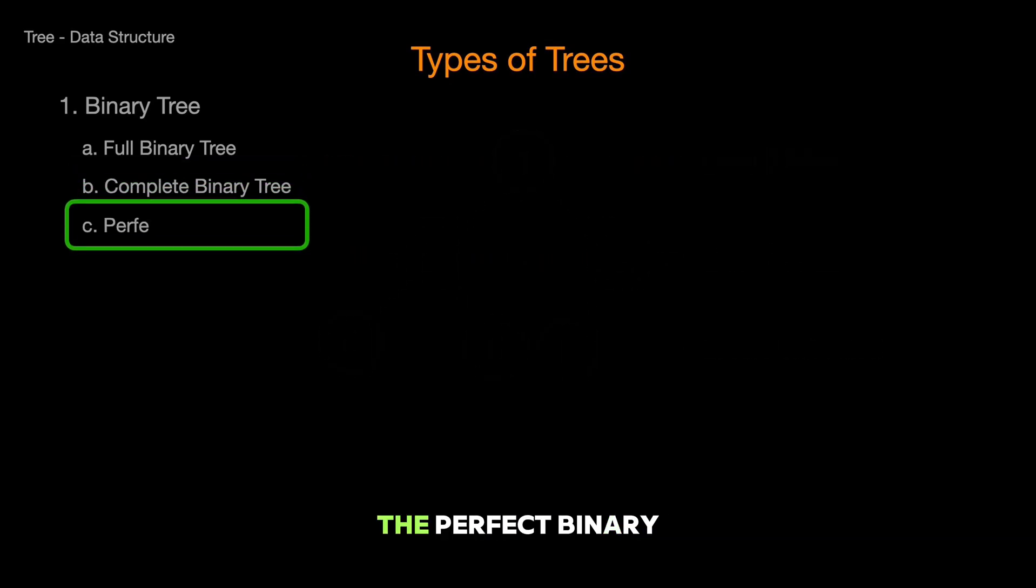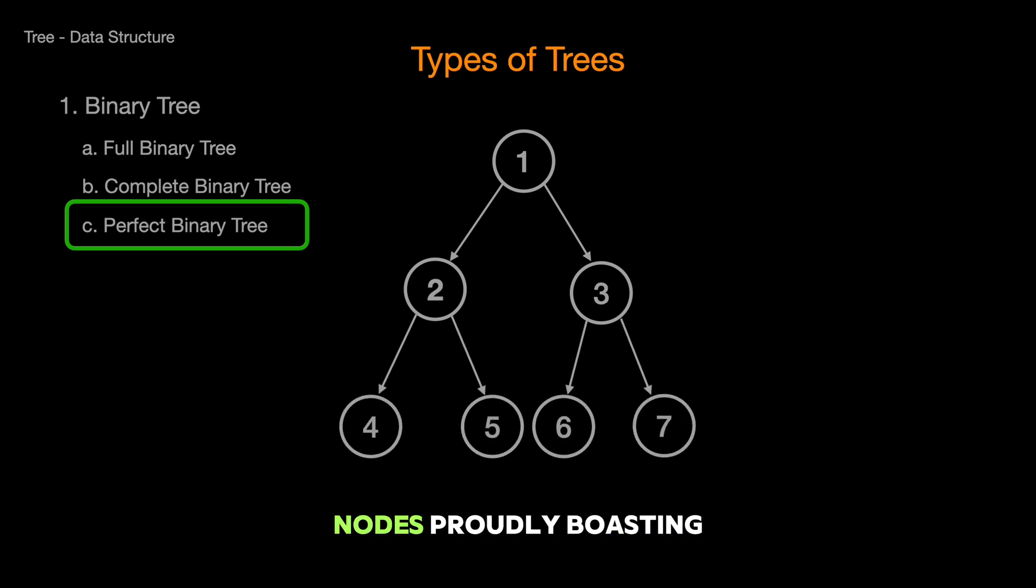Then we have the perfect binary tree. The model family of the binary tree world. It's perfectly balanced, with all leaf nodes at the same level and all parent nodes proudly boasting two children each. If it were a building, it'd be perfectly symmetrical from the ground up.